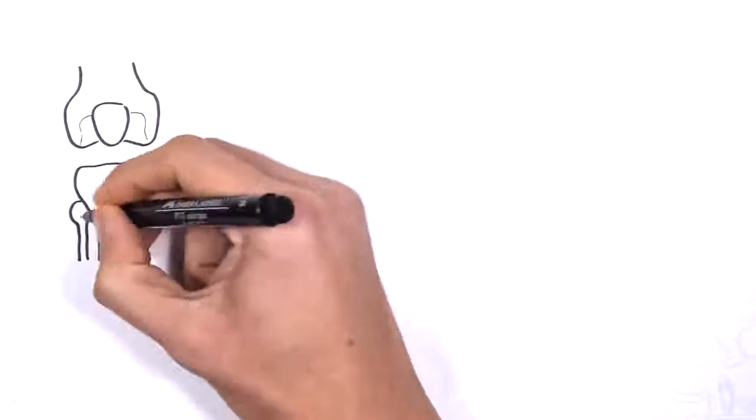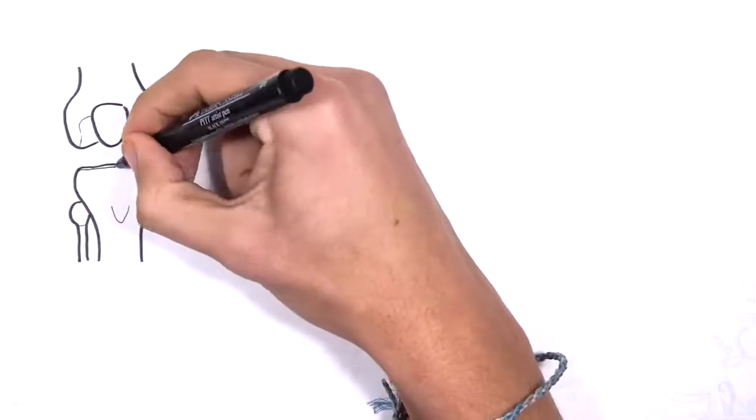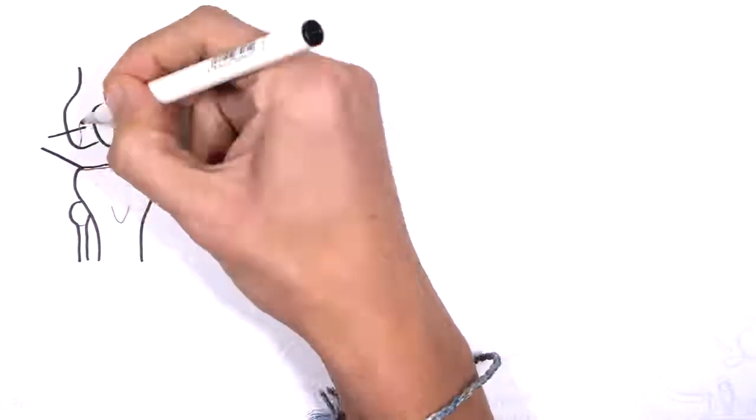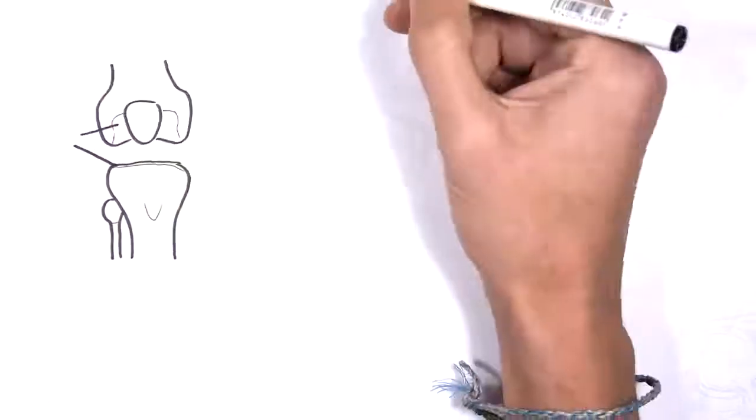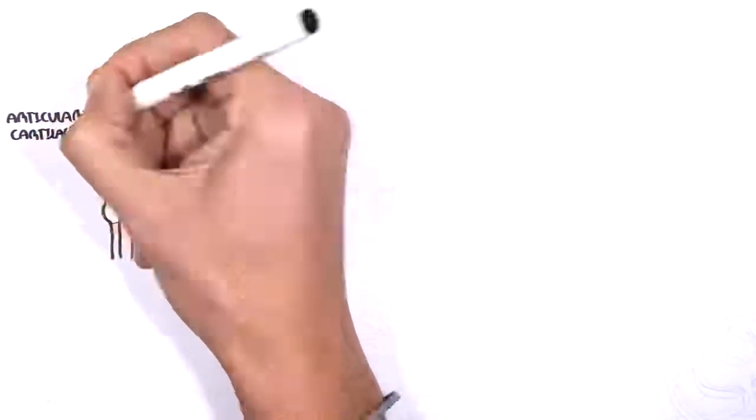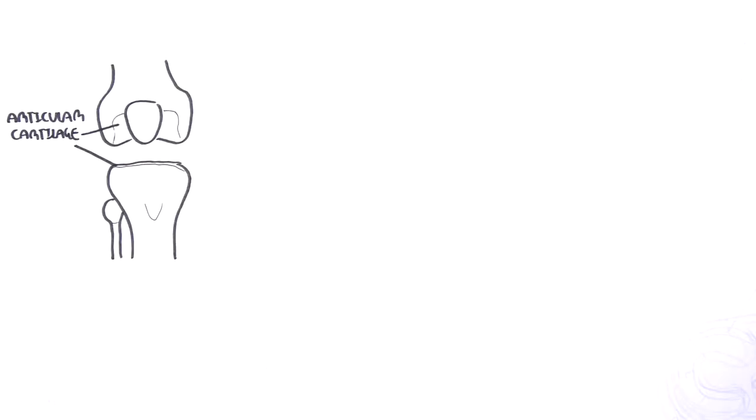The knee is made up of three bones: the femur, the tibia, and the patella. On the surface of the ends of the bones we can find articular cartilage, which are shiny cartilages that protect the bone ends from damage.